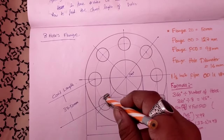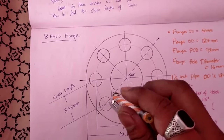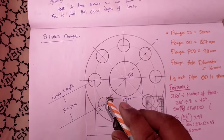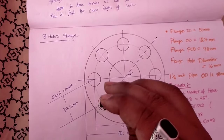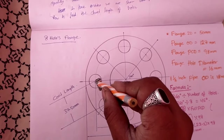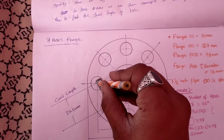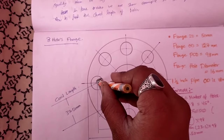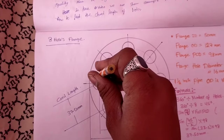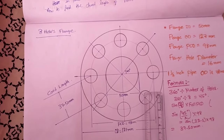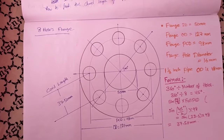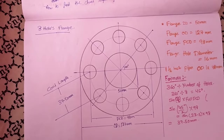From that arc, we again take half the flange hole diameter — 8 mm — and draw another circle. We then take 37.5 mm again and draw the next arc, continuing this process until we have marked all eight hole positions. Taking each center point, we draw another hole of the flange. This is how we can make an eight-hole flange.